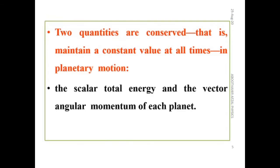If we consider planetary motion, we can see that two quantities are conserved — that is, they maintain a constant value at all times. These two quantities are the total energy and the angular momentum. The total energy is a scalar and the angular momentum is a vector.